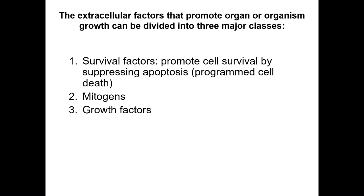The first category is the survival factor — a signal that promotes cell survival by suppressing apoptosis. A mitogen, mito for mitosis, is a signal that promotes cell proliferation. A growth factor promotes cell growth — growth of a cell as opposed to it dividing. A cell can do a few basic things: divide, die, or grow bigger. These are three categories of signals that control those three things.